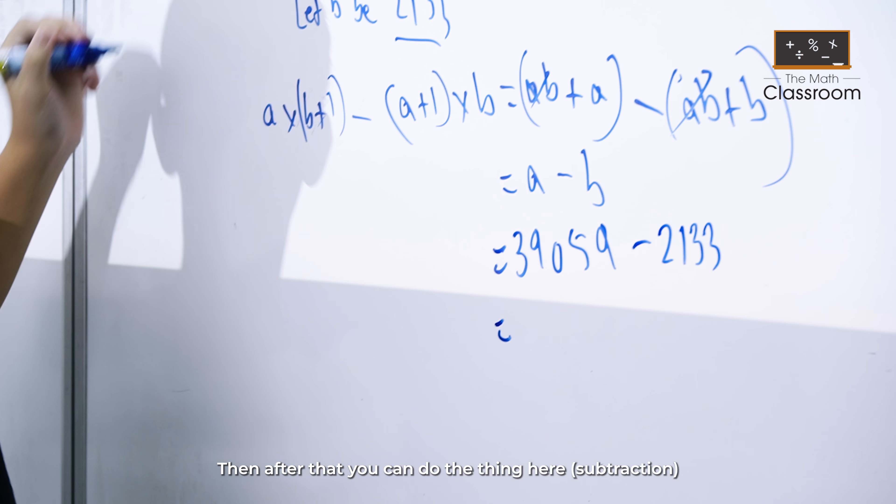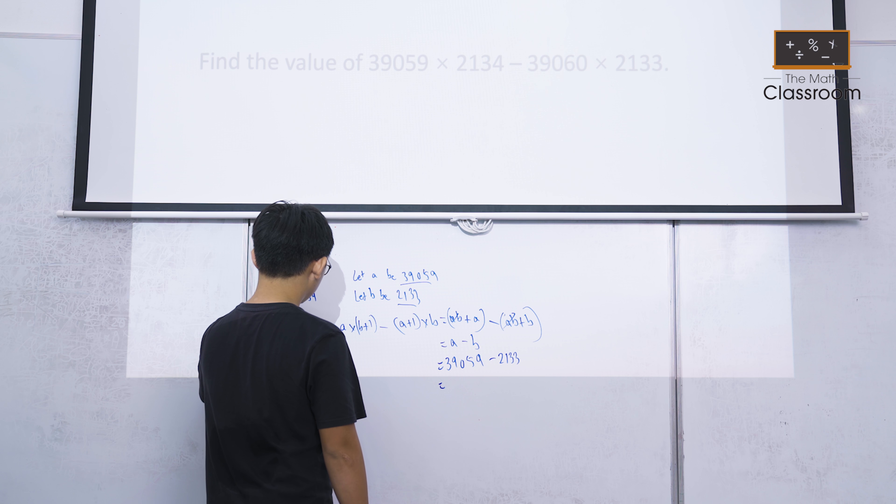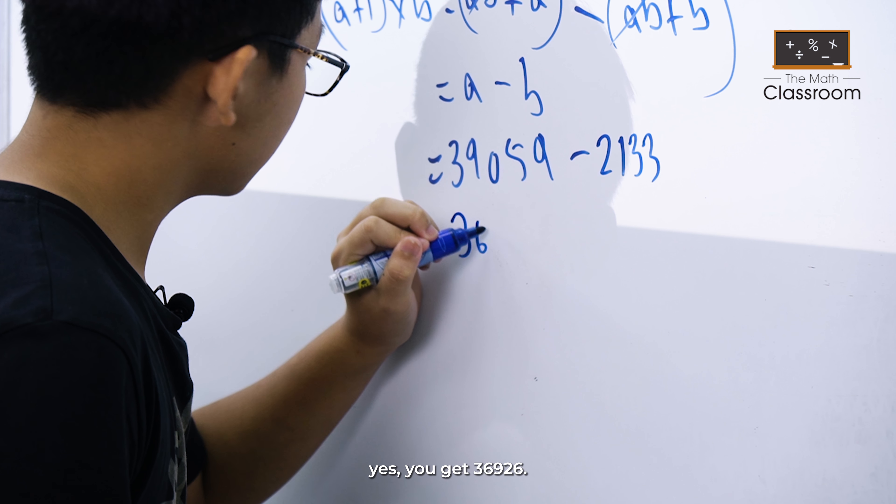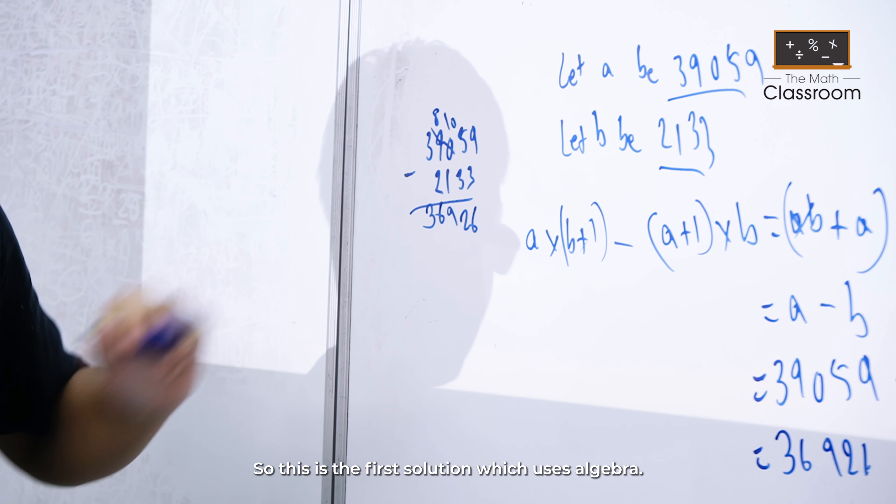Then you can do the subtraction: 39059 minus 2133. You get 36926. So this is the first solution, which uses algebra.